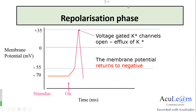The next phase of the action potential occurs when the voltage-gated potassium channels open, causing efflux of potassium along the electrochemical gradient — potassium moves outside — and the membrane potential returns toward the resting membrane potential. This phase is called the repolarization phase, where the membrane potential returns to the negative resting level due to the opening of the voltage-gated potassium channels and the resulting potassium efflux.